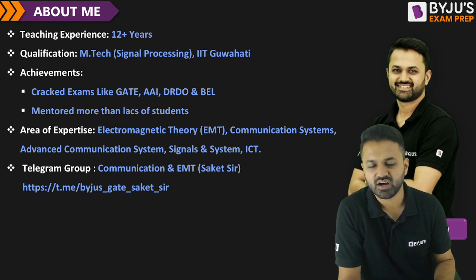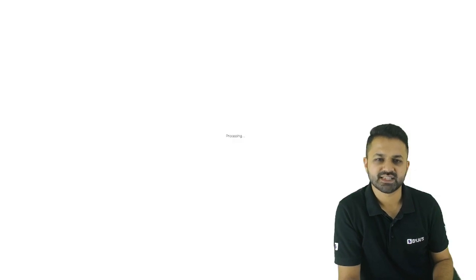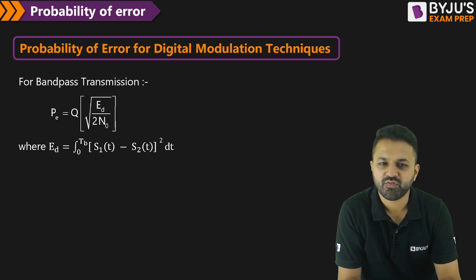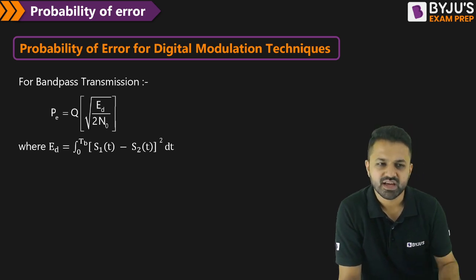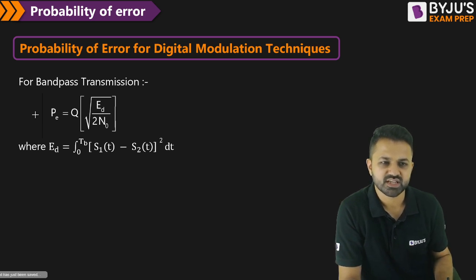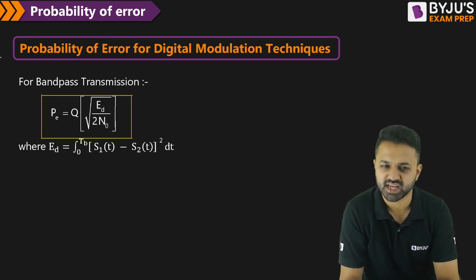Even if you want to clear your doubt, you are welcome in this group. So let's start the session with the probability of error for digital modulation technique. To calculate the probability of error, I am giving you one simple formula, and this is for the digital modulation technique. You can apply this formula to calculate for binary phase shift key, binary frequency shift key, and binary amplitude shift key.